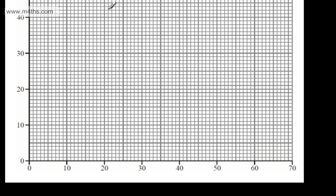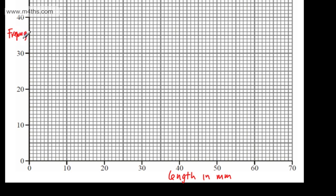Let's go ahead. What I've got here is a set of axes with an x and a y. On the bottom I'm going to have the length in millimetres of the worm, and up the side we're going to have the frequency — the number of them.